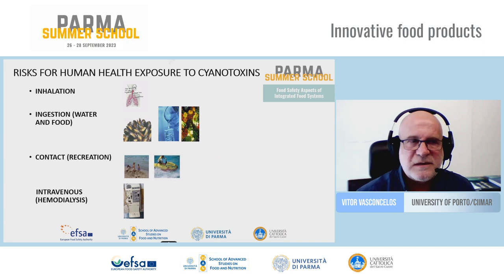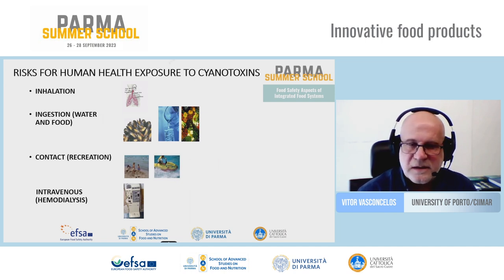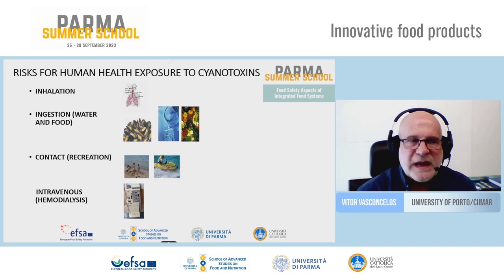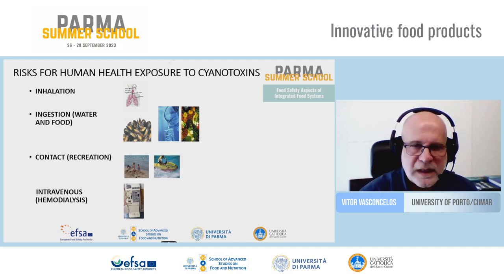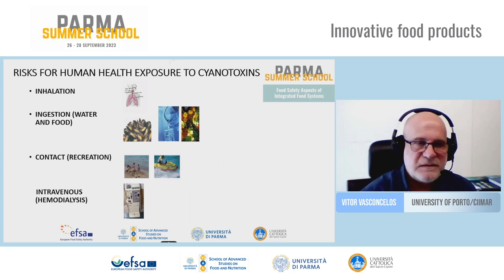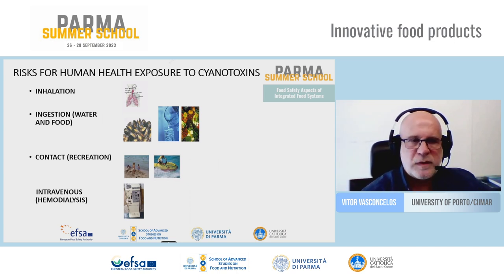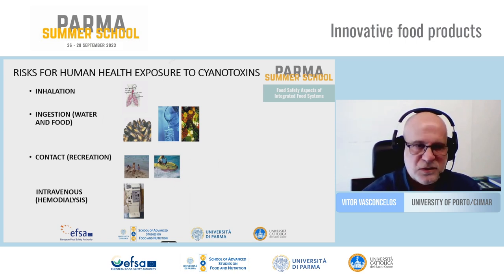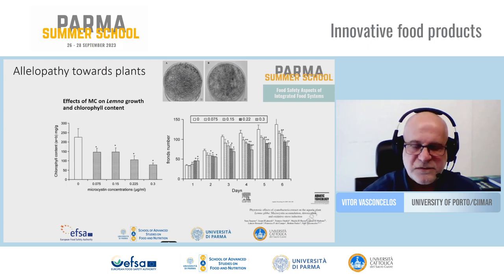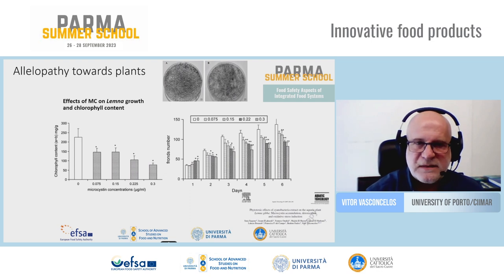Whenever we have food items contaminated with these toxins, they can cause severe risks. In terms of human health, we can be exposed via inhalation — for instance when using water contaminated with toxins for showering at home or in recreational areas. We can also be contaminated by ingestion, not just through contaminated water but also through food items. The most severe case is when these toxins are present in water used for dialysis: in the last decade of the last century, more than 60 people were killed by exposure to water containing these toxins.